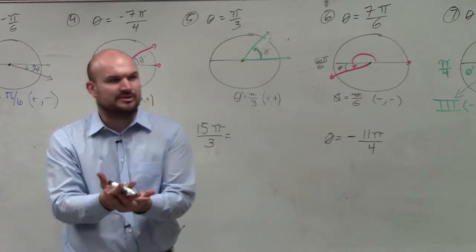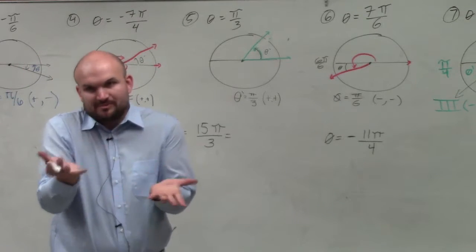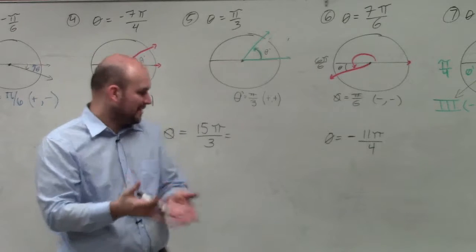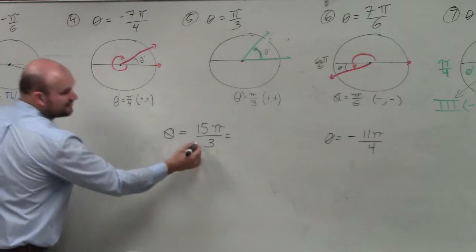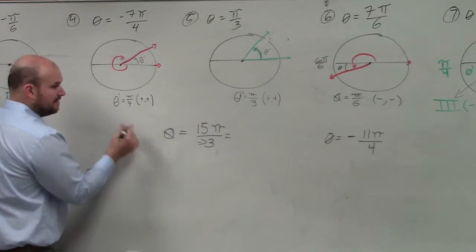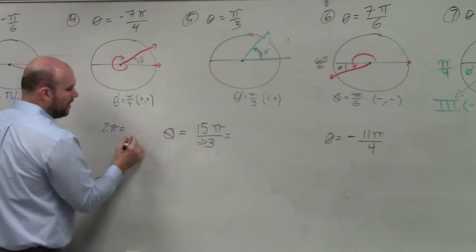The last example was kind of easy to break it up into 2 pi, right? Because 2 pi plus 2 pi plus pi would equal 5 pi. But what we need to understand is if we're talking about thirds, then 2 pi is equal to what?